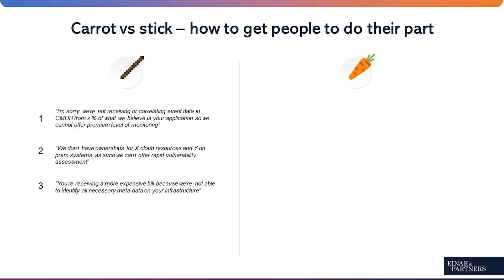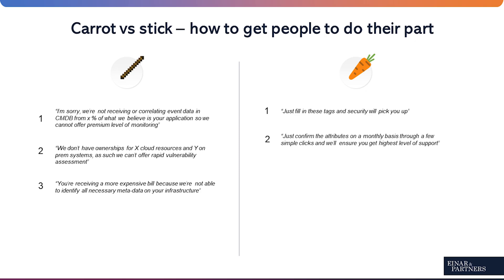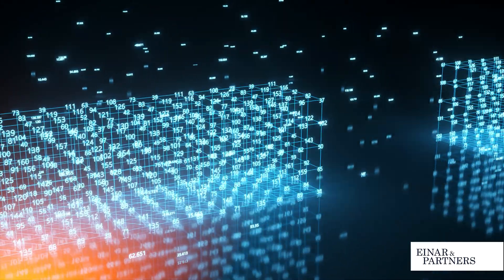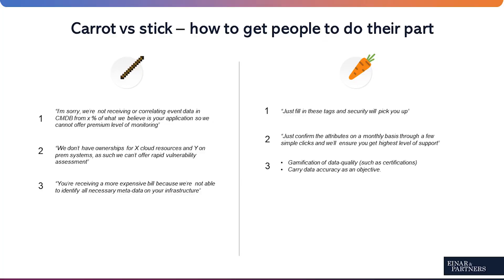On the carrot side, it's all about simplicity — having people do a small amount of effort to gain a lot of value. For example: just fill in these tags and security will pick you up, or just confirm these attributes once per month with a few simple clicks and we'll give you the highest level of support. Something else used successfully is gamification of data quality — for example with certifications. We've also seen companies carry data accuracy as an objective across departments. Keep these tips in mind for balancing the carrot and the stick to promote better data quality in your organization.